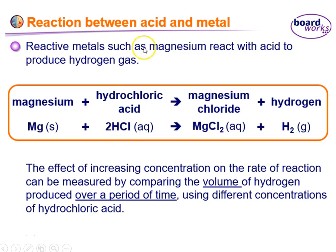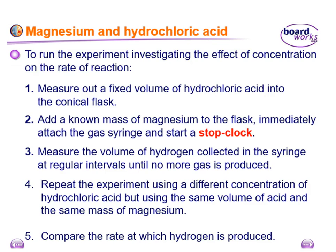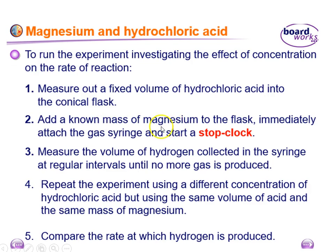We're looking at the effect of concentration, so changing the concentration of hydrochloric acid to see how that affects the rate. You run each experiment with a fixed volume of hydrochloric acid — all conditions have to be the same. The only difference between the reactions is the concentration of HCl used each time. The amount of magnesium, its surface area, and the temperature all have to be kept the same.